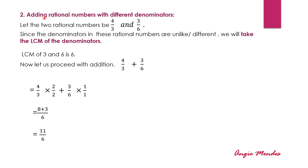This is the second case wherein we can add rational numbers where the denominators are different. Let us take two rational numbers: 4 upon 3 and 3 upon 6. These denominators are not the same — they are different. When denominators are not the same, we need to take the LCM of the denominators. Taking the LCM of 3 and 6, we get LCM 6.